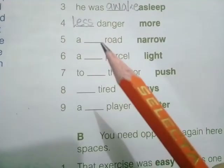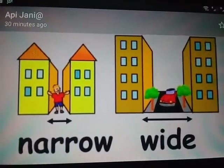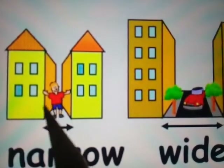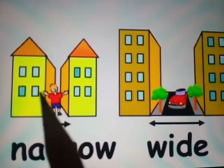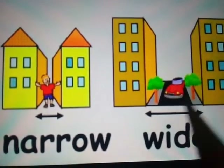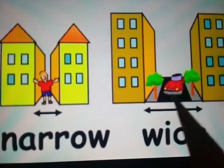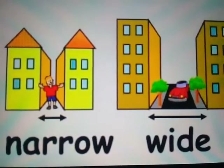Number five: 'a dash road' and the word is 'narrow.' We have to give the opposite of narrow. Dear students, 'narrow' means small — you can see here the man is pointing at a small passage. The opposite of narrow will be 'wide.' You can see here the road is wide. Narrow means small, wide means big. So the answer will be 'wide.'